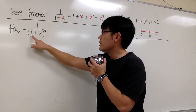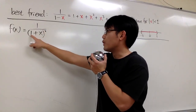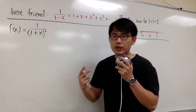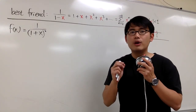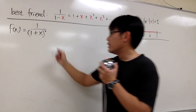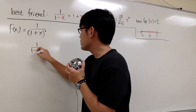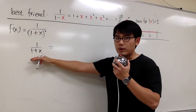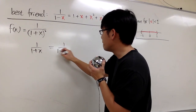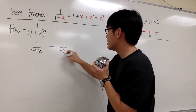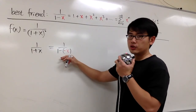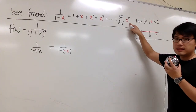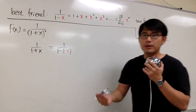Here we have 1 over — if you just pay attention to the inside, we have 1 plus x. Our best friend is 1 over 1 minus x. So we should come up with a power series for 1 over 1 plus x first. We write 1 over 1 plus x as 1 over 1 minus (negative x), so that we have the right to plug negative x in for x.